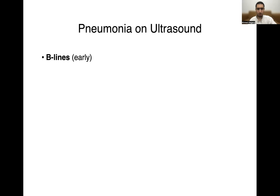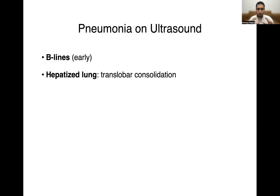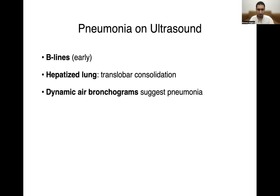What does pneumonia generally look like on ultrasound? We mentioned hepatized lung with dynamic air bronchograms. But early on in the course of the disease, pneumonia can look like just B-lines — fluid pockets that give you the comet tail or rocket artifact. Then as it progresses, the lung starts becoming consolidated. You start seeing translobar consolidation, which we call hepatized lung. As mentioned, dynamic air bronchograms suggest a pneumonia.